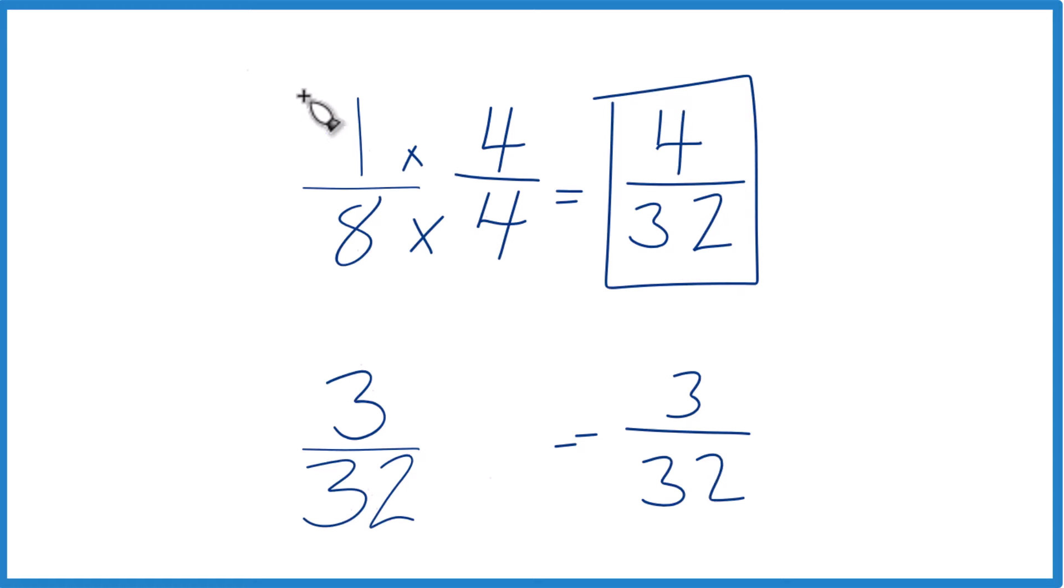Since these are equivalent, 1 eighth is going to be greater than 3 32nds. That's it. This is Dr. B, and thanks for watching.